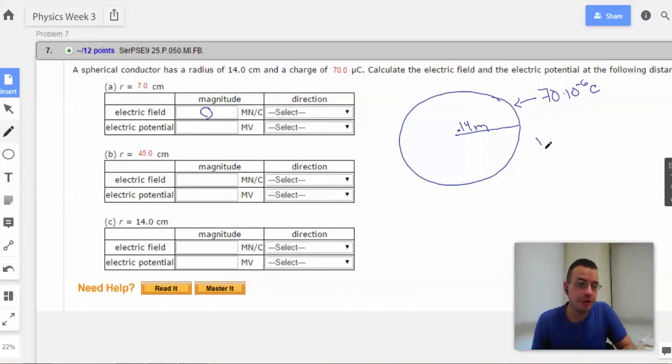Now, we know that voltage equals negative integral E dot dr. So when we put in 0 for electric field, we take the integral of that, what do we get? Well, we get 0.